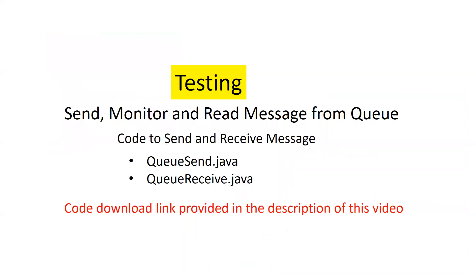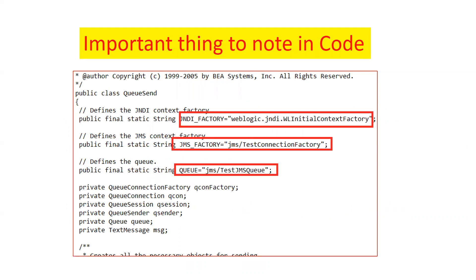Now we will send a message to the queue and then read a message from the queue. For that, we have two code files: QueueSend.java and QueueReceive.java, which you can download from the video description. One important thing to note in the code: first is the JNDI factory — 'weblogic.jndi.WLInitialContextFactory' — this is the default JNDI connection factory that comes with WebLogic server and is commonly used by developers. The two other important items are the JMS connection factory JNDI name and the queue JNDI name, which we configured earlier.